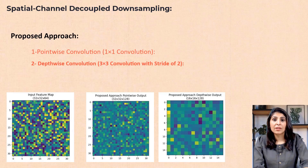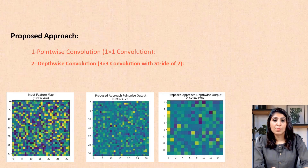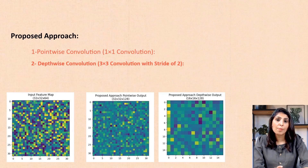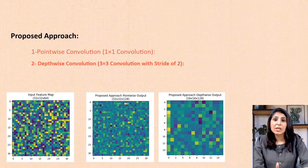In the current approach, spatial dimension reduction and channel adjustment happen together in one step using a single 3x3 convolutional layer. In the proposed approach, the process is separated into two steps. This two-step approach leads to more efficient computations by first adjusting the channels and then reducing the spatial dimensions, resulting in fewer computations and parameters while achieving similar downsampling.